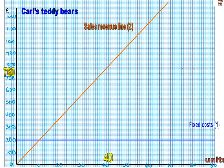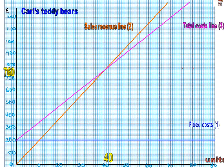Once you've got the revenue line you're 98% there, because the total cost line has to go through that same dot we drew earlier — at the breakeven point your revenue is the same as your total costs. This time though, the total cost line starts not from zero but from 200, because total costs include your fixed costs and your variable costs. So start at 200 and draw a line through where £760 and 40 units meet, and the two lines — the total cost line and the revenue line — meet at the breakeven point.